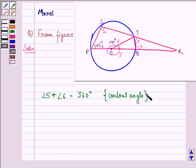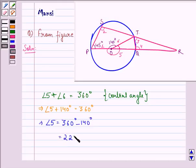It's given that angle 6 is 140 degrees. So angle 5 plus 140 degrees equals 360 degrees. This implies angle 5 equals 360 minus 140, that is 220 degrees.